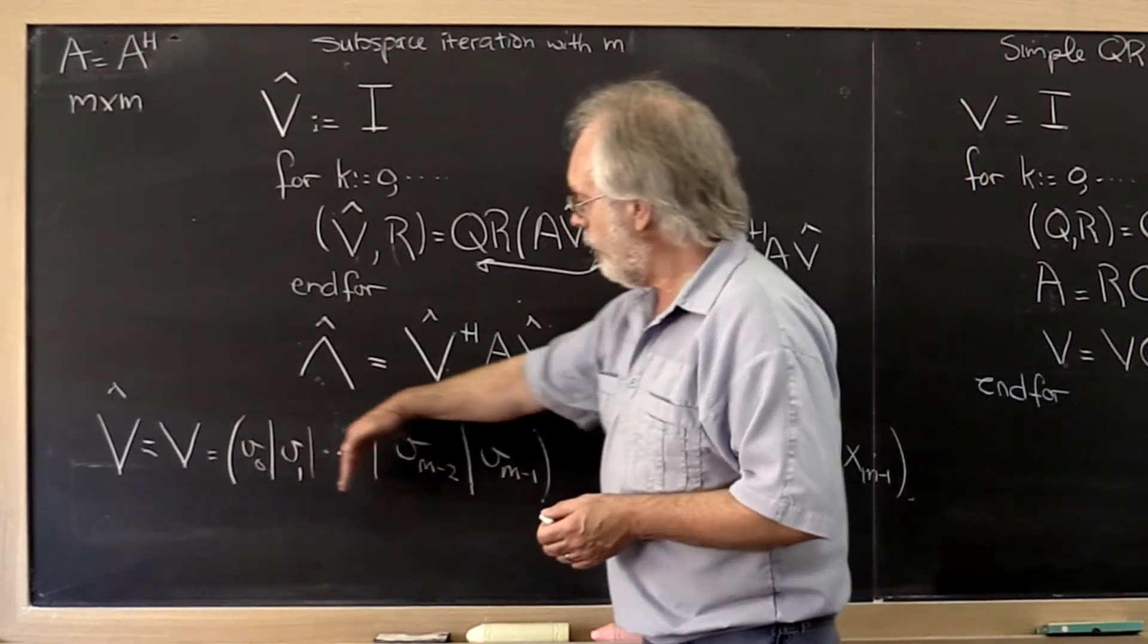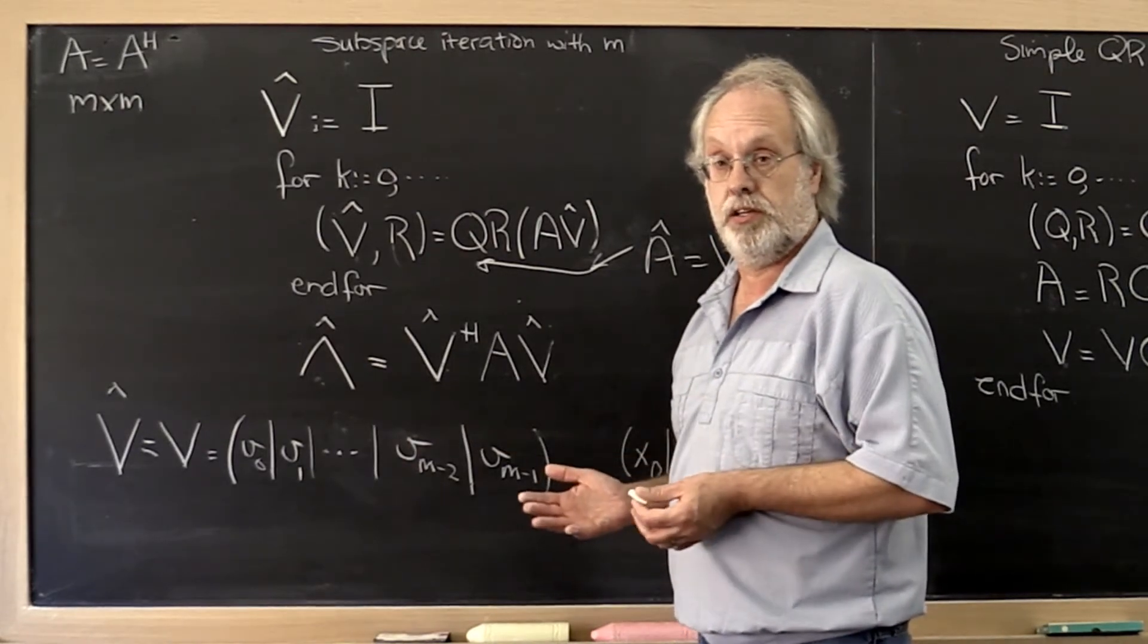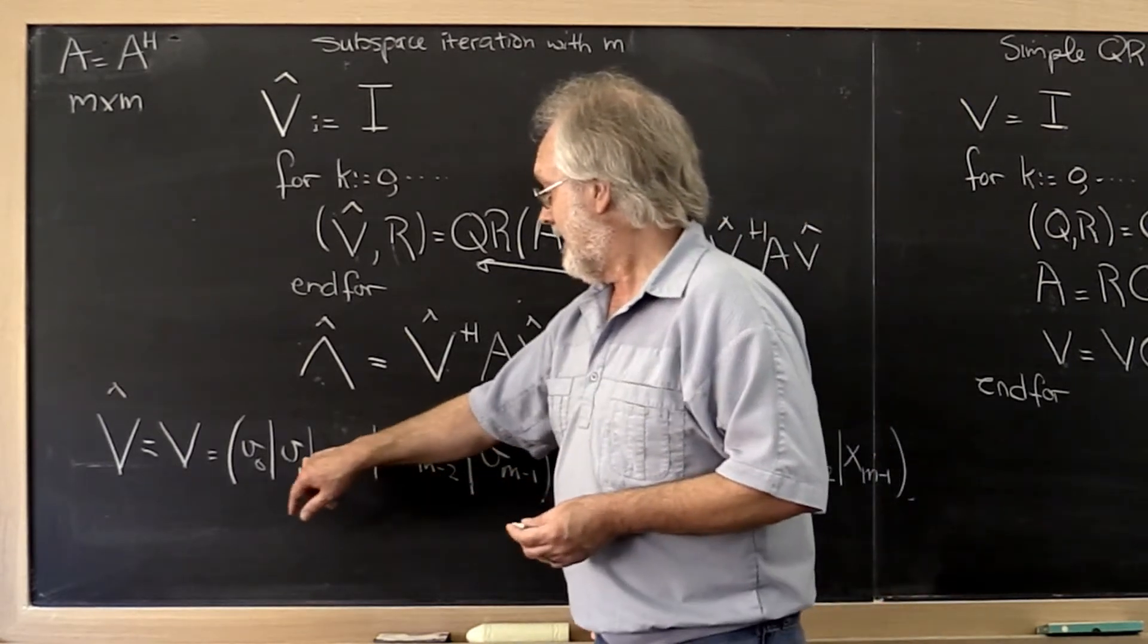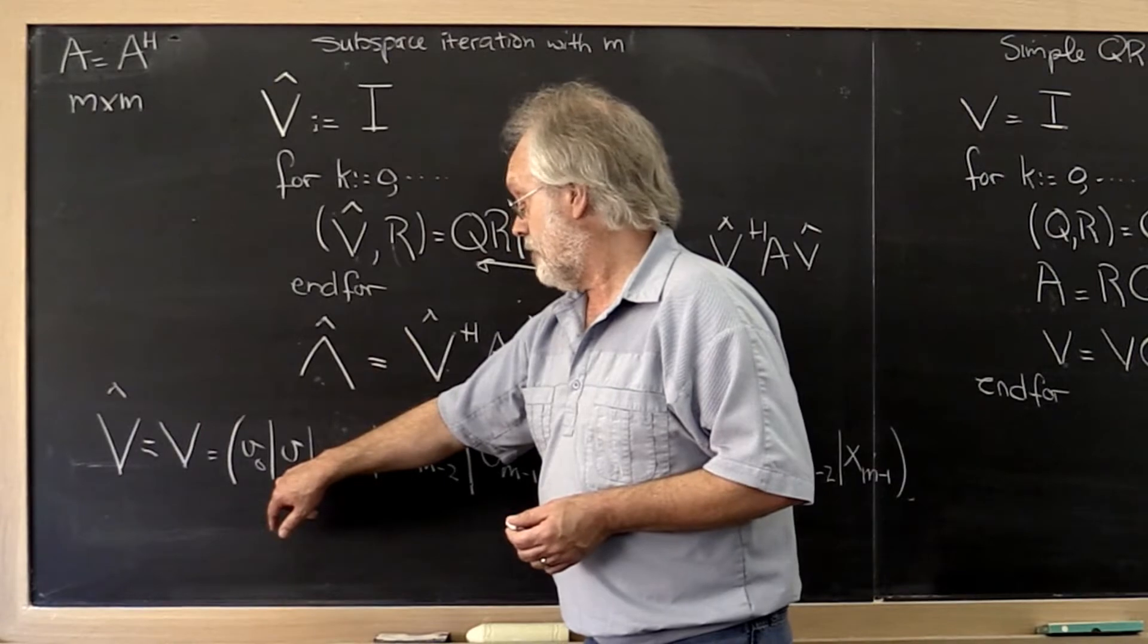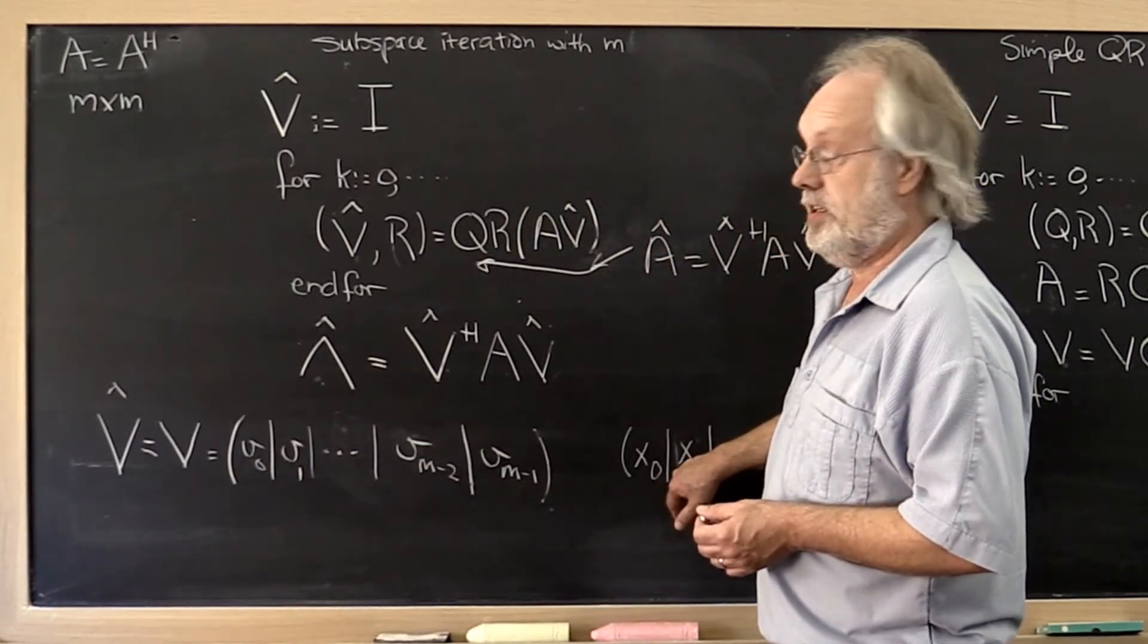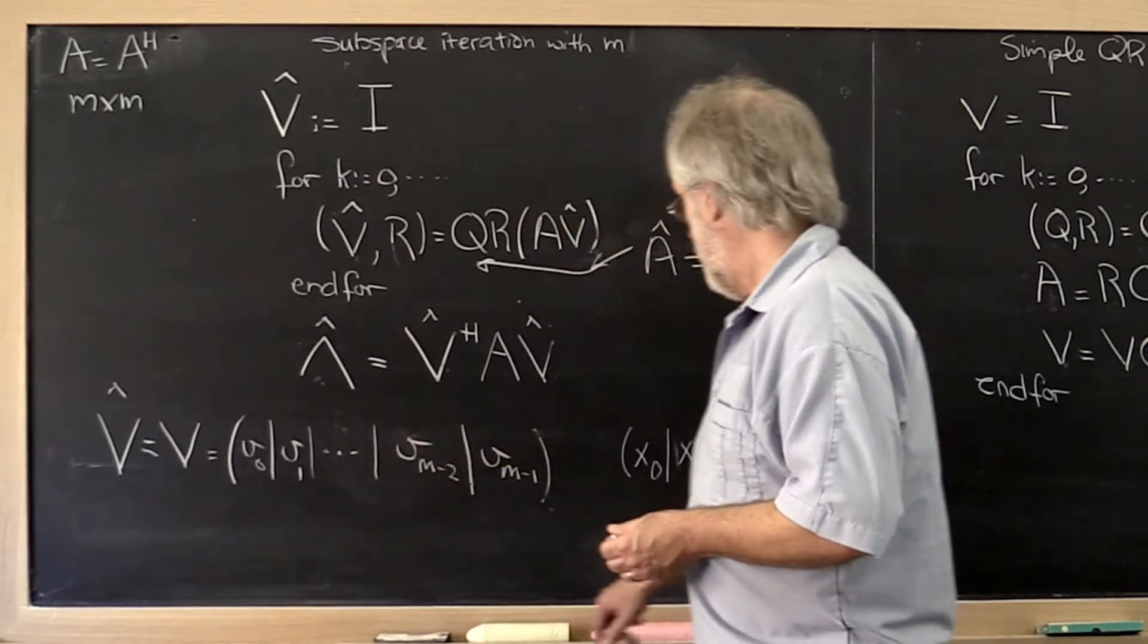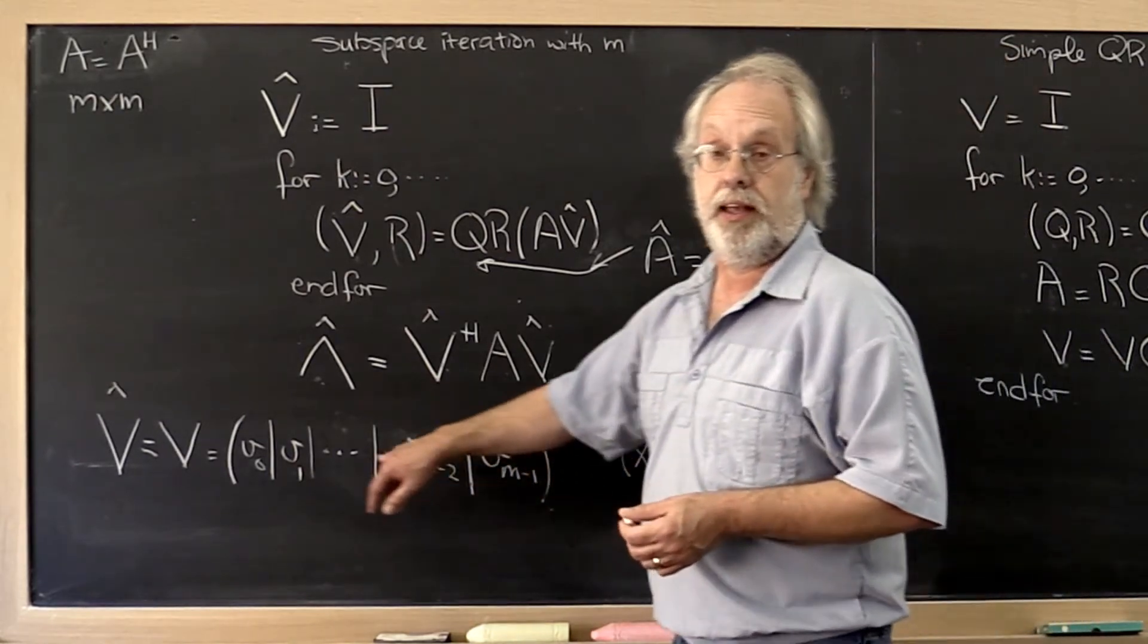How fast the component in the direction of all of these other factors disappears is dictated by the absolute value of lambda 1 divided by lambda 0 when it comes to this component, lambda 2 divided by lambda 0 in absolute value when it comes to the component in the direction of x2 and so forth.